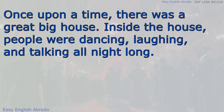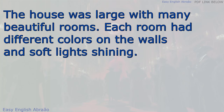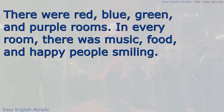Once upon a time, there was a great big house. Inside the house, people were dancing, laughing, and talking all night long. The house was large with many beautiful rooms. Each room had different colors on the walls and soft lights shining. There were red, blue, green, and purple rooms.